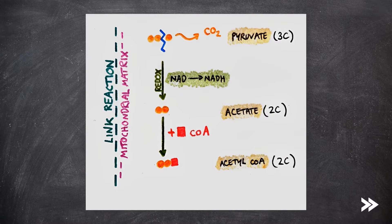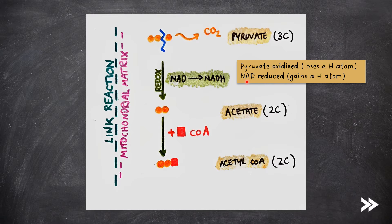Here, the pyruvate loses a carbon as CO2, and is then converted to a 2-carbon acetate via a redox reaction with NAD. NADH is reduced as it gains a hydrogen atom, and pyruvate is oxidized. The acetate then reacts with coenzyme A to form acetyl coenzyme A. So overall, pyruvate, coenzyme A, and NADH enter the acetyl coenzyme A, CO2, which is excreted, and NADH.